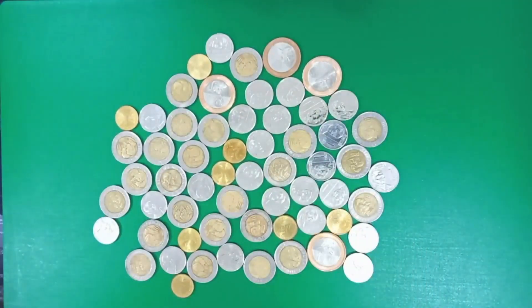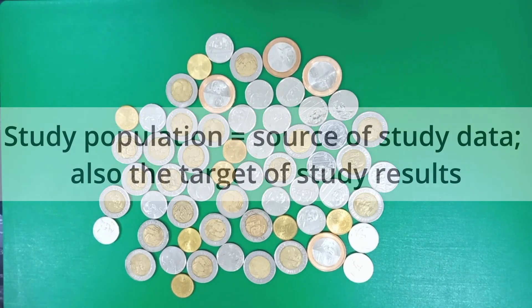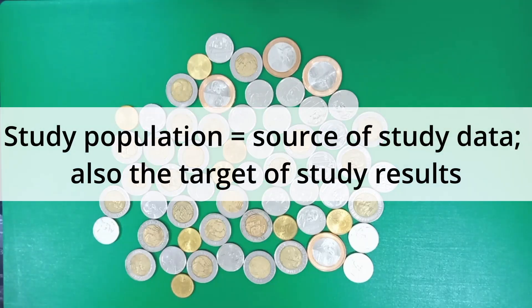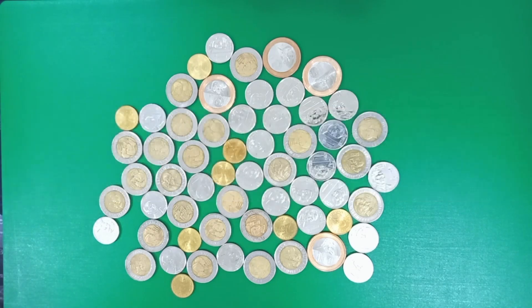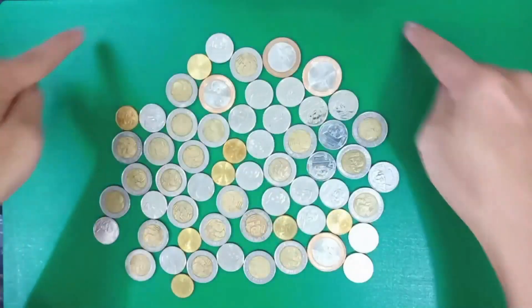When doing research, it is first important to define who or what our study population is, or from whom our information will be coming from. And this entire group is also to whom we want to generalize our study results. In our setup, our study population is the entire coin population.